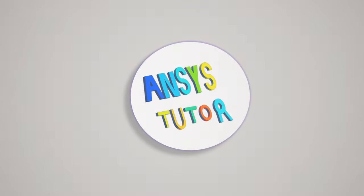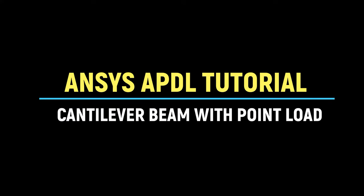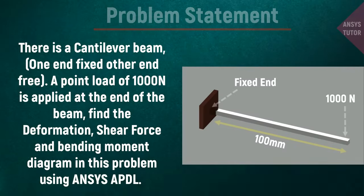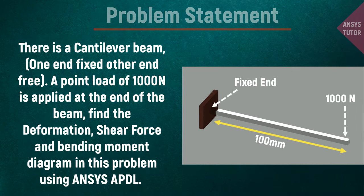Hello friends, welcome to ANSYS Tutor. In this demonstration we will analyze a one-dimensional cantilever beam with a point load using the ANSYS APDL software package. It is a cantilever beam of 100 millimeters length with a square section of 10 by 10 millimeters, fixed at one end and free at the other. At the free end, a point load of 1000 newtons is applied. We need to find the deformation, shear force, and bending moment using ANSYS APDL.